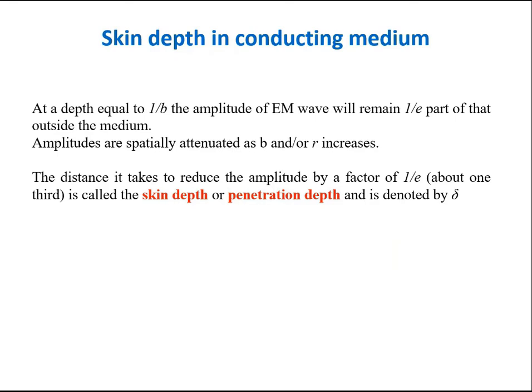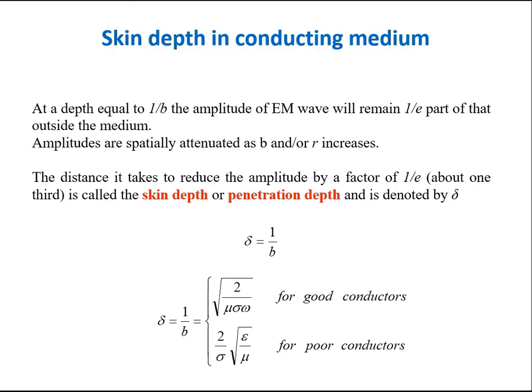This distance is known as the skin depth in the conductor. Because at a depth equal to 1 by b, the amplitude of EM wave will remain 1 by e part of that outside the medium. So, amplitudes are attenuated as b or r increases. The distance it takes to reduce the amplitude by this factor 1 by e, about 1 third, is known as skin depth or the penetration depth and is denoted by delta. So, delta is 1 by b. For a good conductor, delta is 2 by sigma under root of epsilon by mu. Because for a poor conductor, sigma is very less, delta is very high. And this shows that electromagnetic waves can propagate easily inside a poor conductor. But for a good conductor, sigma is very high, so delta is very less. And it says that in a good conductor, the electromagnetic waves cannot penetrate or they can penetrate only up to a fixed distance of skin depth or the penetration depth.